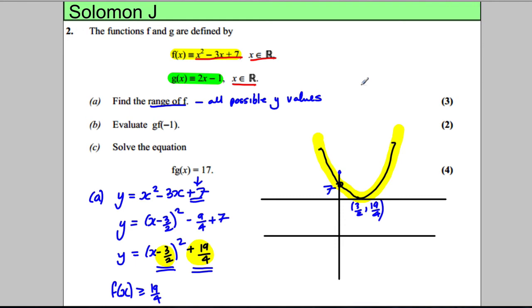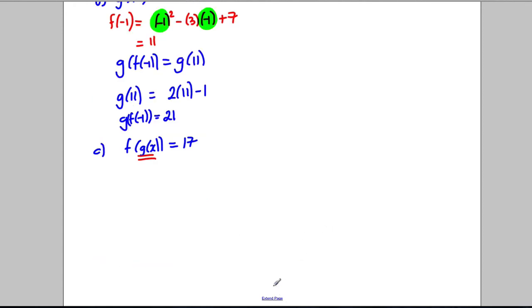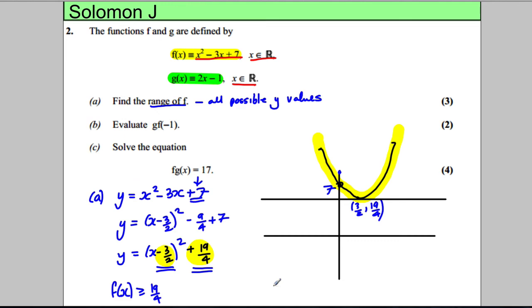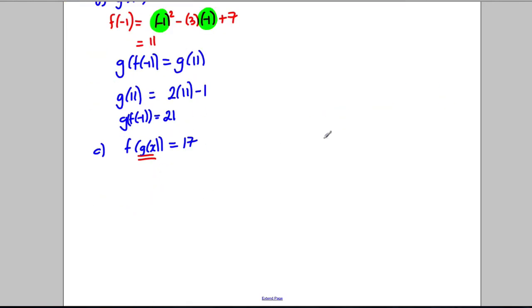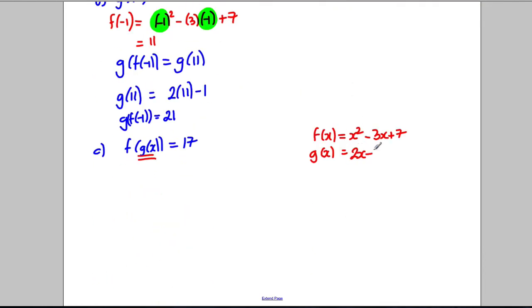We're asked to solve the equation f(g(x)) is equal to 17. So for part c we're solving f(g(x)) = 17. We're going to put the function for g(x) into the function for f and make it equal 17 and solve the resulting equation. Remember our functions are f(x) = x² - 3x + 7 and our g(x) = 2x - 1. So all I'm going to do is put this 2x - 1 in place of x in here and then make it equal to 17.